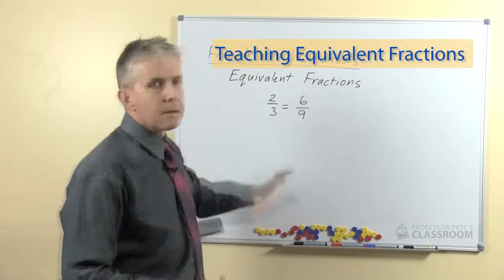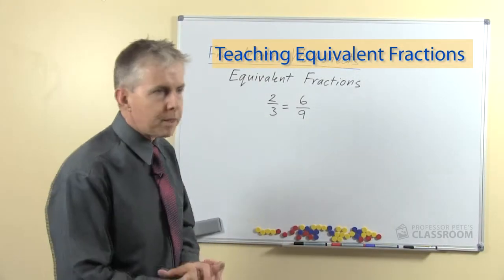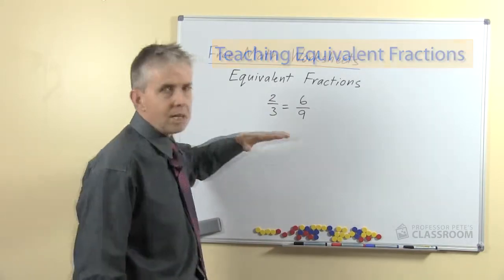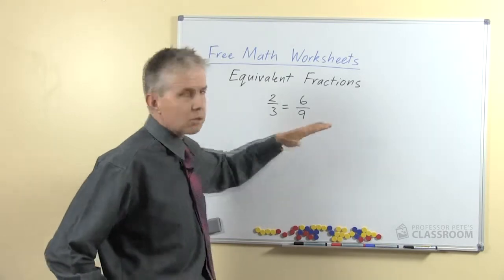So here's an example, a well-known process for teachers of math at least. I think the children find it difficult, but teachers are familiar: two-thirds equals six-ninths.